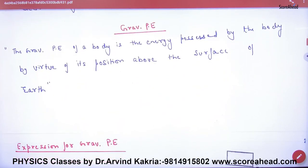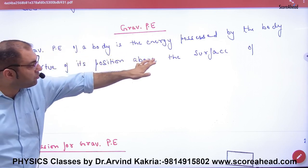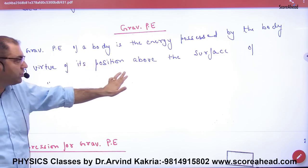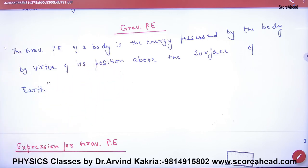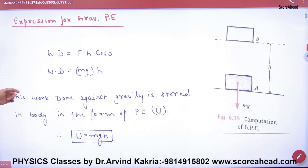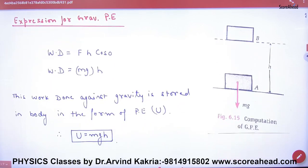Gravitational potential energy is the energy possessed by a body by virtue of its position above the surface of the earth. Above the surface of the earth — when it falls, what is its gravitational potential energy?